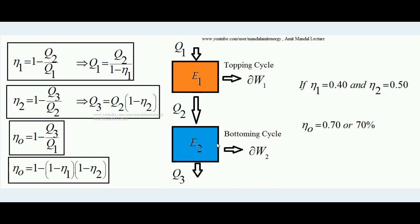Suppose there are two heat engines: Engine 1 (E1) and Engine 2 (E2). The definition of a heat engine is that it absorbs some amount of heat from a high temperature reservoir — that is the heat input — and it rejects some amount of heat. Q1 is the heat addition to the first engine and Q2 is the heat rejection. No heat engine is possible in which there is no heat rejection.